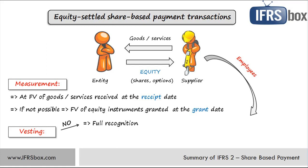However, if these benefits are vested, the situation is different. In such a case, a counterparty is required to complete a specified period of service. For example, an employee gets 100 shares of their employer after three years of service. IFRS 2 regards these shares as being provided for future service over the vesting period, and therefore these services are recognized over the vesting period with the corresponding increase in equity. Vesting conditions are not reflected in the fair value of one share granted; instead, they are reflected in the number of shares that an entity needs to recognize each year over the vesting period.